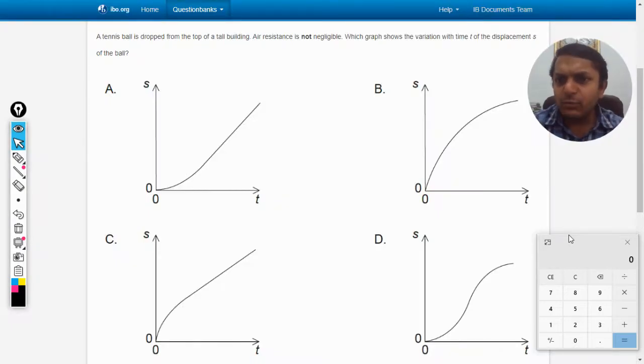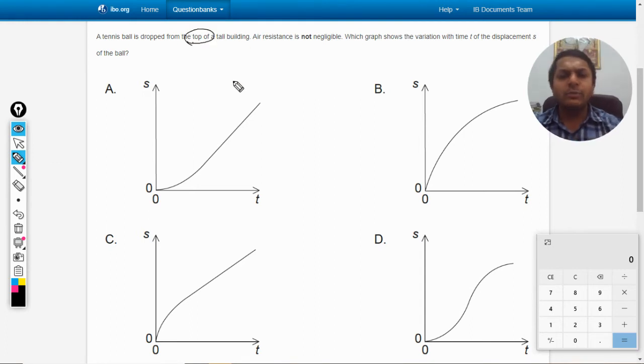Okay, a tennis ball is dropped from the top of a tall building. Air resistance is not negligible, it is not neglected. So viscous drag force is considered, it is not neglected.